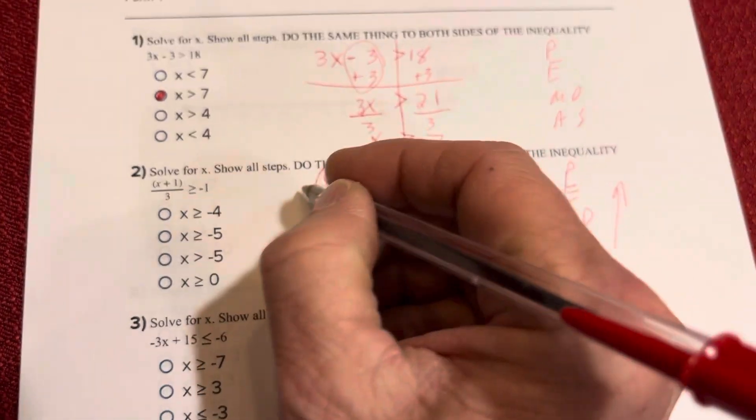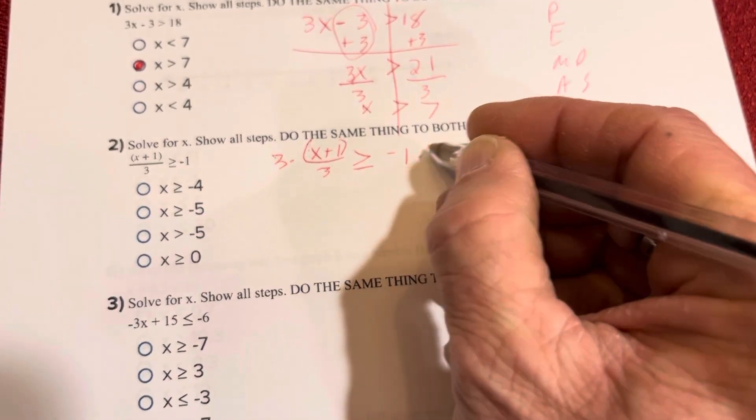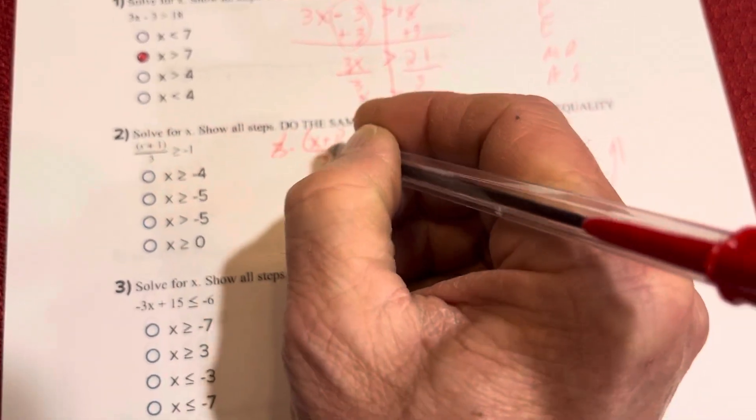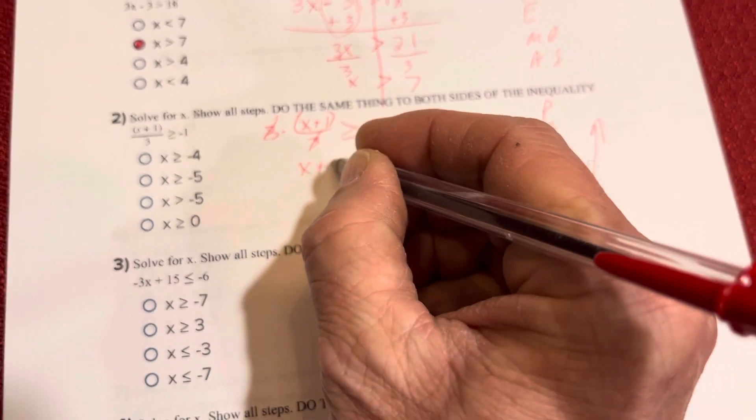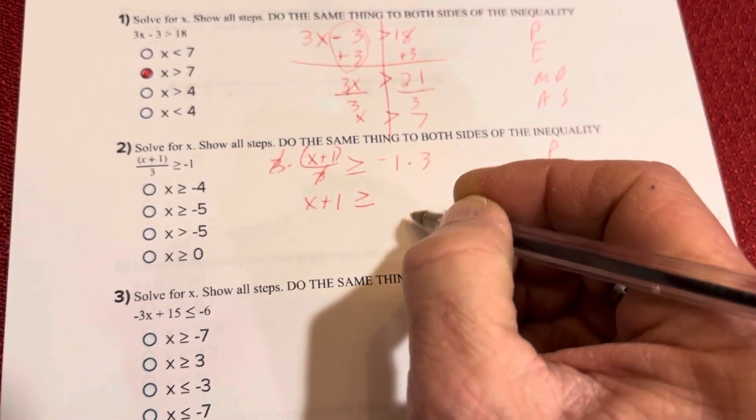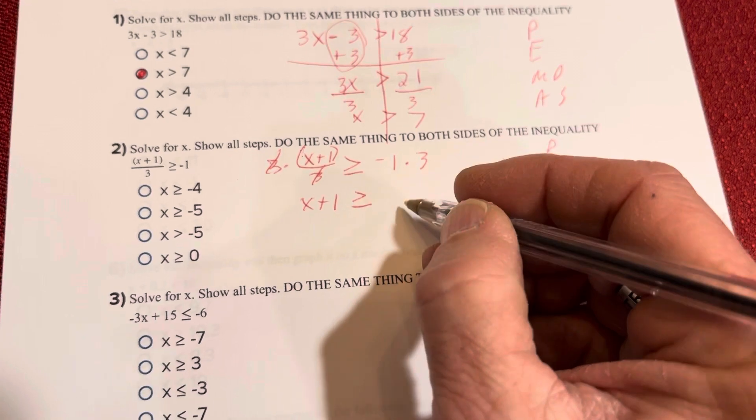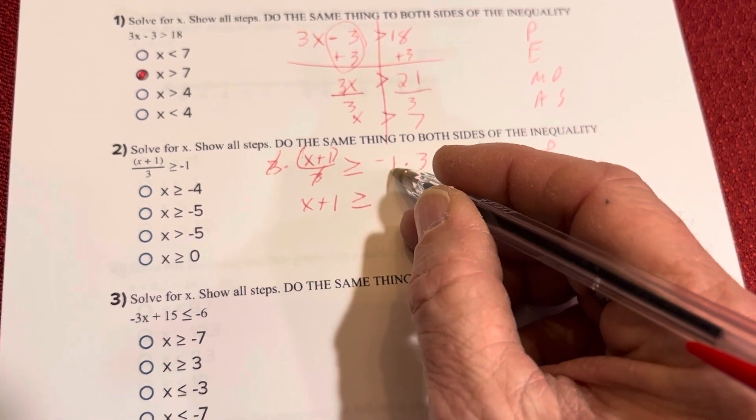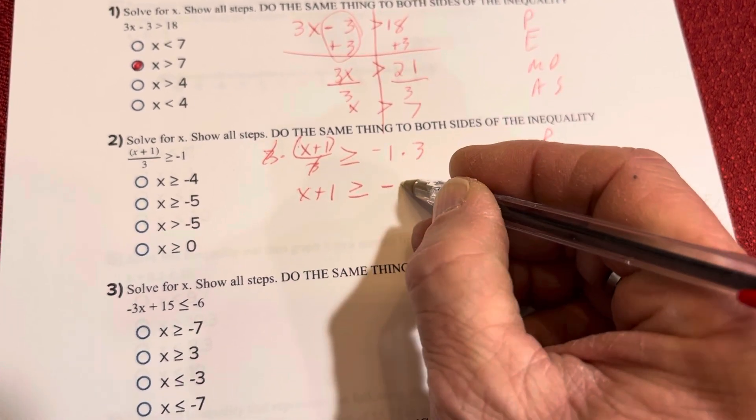Undo the division with multiplication. So I'm going to multiply both sides by 3. When I do that, the 3's cancel, so I'm going to get x plus 1. And over here, I keep the same inequality sign, which is greater than or equal to. And then a negative times a positive is a negative, and 1 times 3 is 3, so negative 3.